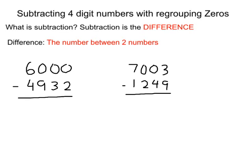Just to remind you that subtraction is the difference, and basically a difference means the number between two numbers. So over here we have the question 6,000 minus 4,932. When we're subtracting this we're basically finding the number that is in between 6,000 and 4,932.